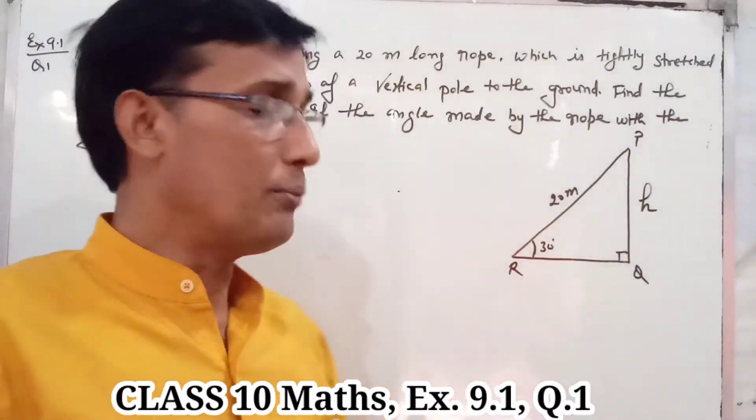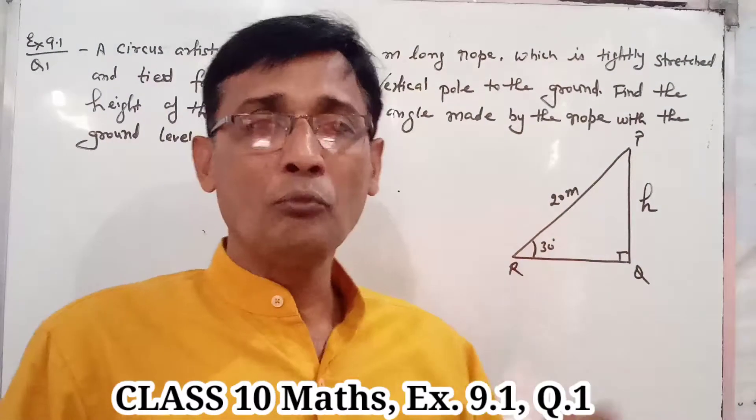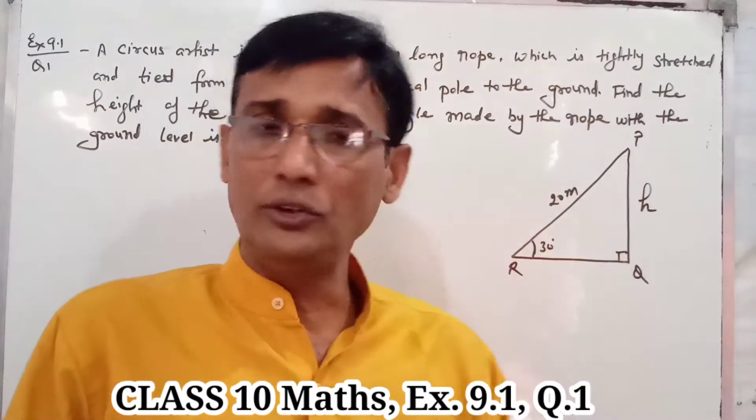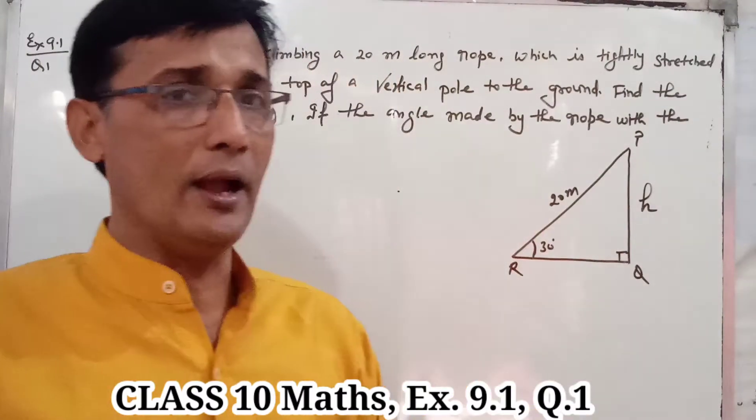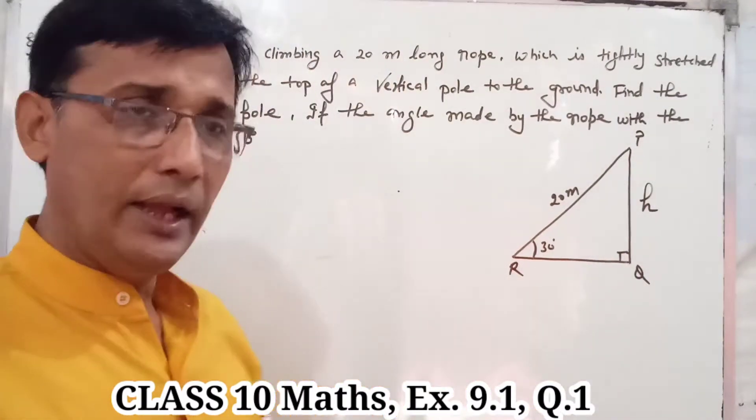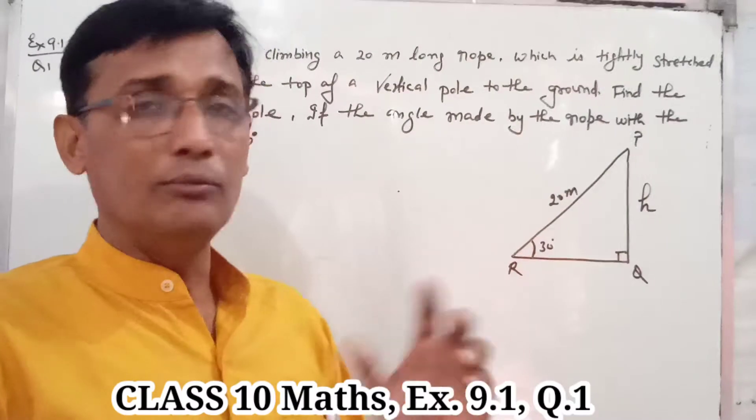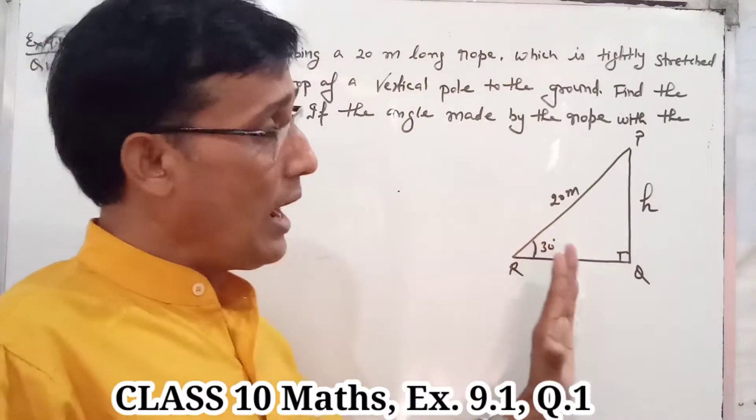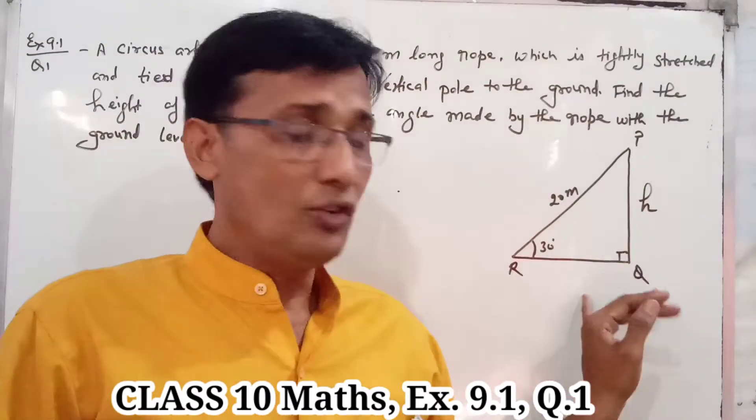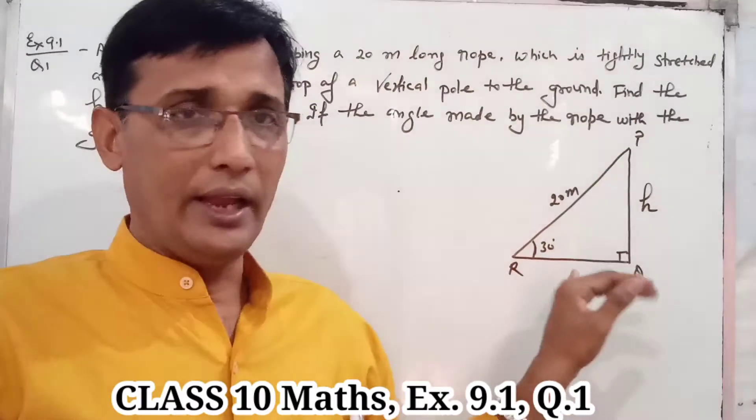The pole is equal to base squared plus perpendicular squared. So Pythagoras theorem is far away from here. Now we have to use the trigonometric ratios here.